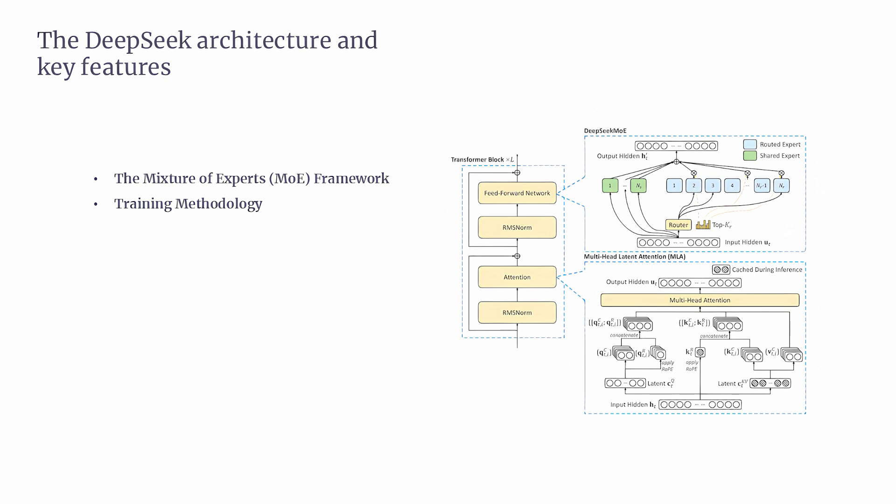The second part covers training methodology. DeepSeek's training happens in multiple stages, each improving its ability to understand and generate text. First, the cold start phase: the base model is fine-tuned on a small set of high-quality examples, which helps improve clarity and readability in its responses. Second, reinforcement learning — the model is trained to improve reasoning skills by rewarding accurate answers. Third, supervised fine-tuning: it learns from a broad dataset across different fields, making it better at writing and general knowledge tasks.